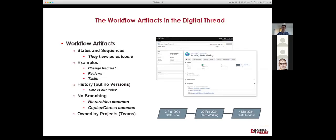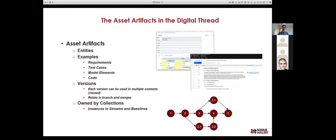When working with enterprise artifacts, there are basically two types. The first is what I'll call a workflow artifact — like what you saw in Jira. They have states and sequences, outcomes, and history, but they have no version. My index is effectively time — this item evolves over time. We don't branch a change; occasionally we'll create a clone but then it's a new workflow item. These are owned by projects and teams and participate in a digital thread, but they're on the periphery, pointing to the core artifacts.